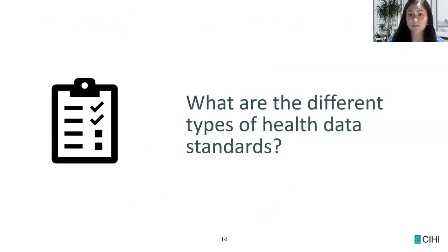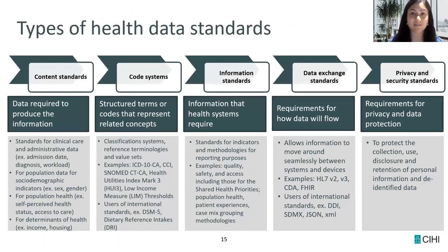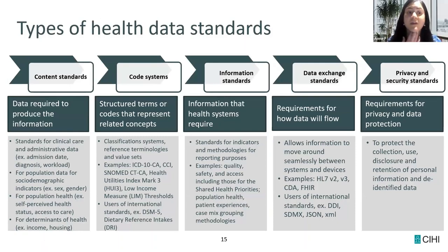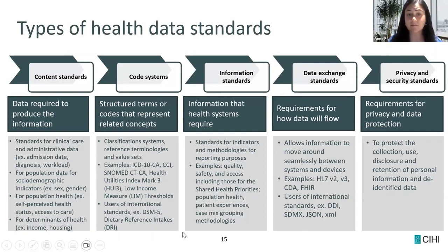So what are the different types of health data standards? There are five main categories. We have content standards — data required to produce the information — for things like clinical care, administrative data, population health, and social determinants of health. We then have code systems: structured terms or codes that represent related concepts, such as classification or terminology systems, with examples like ICD-10-CA, CCI, and SNOMED-CT-CA. We also have information standards for indicators and methodologies for reporting purposes, covering quality, safety, access, population health, and patient experiences.